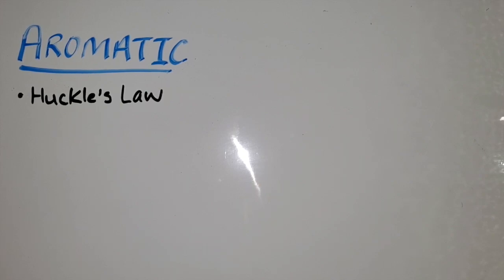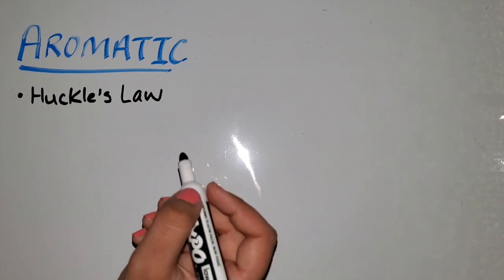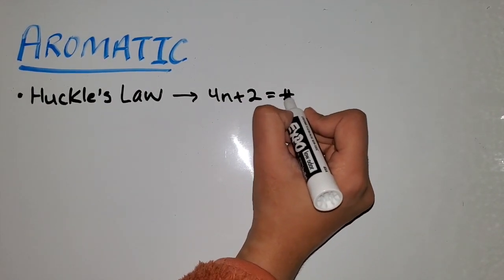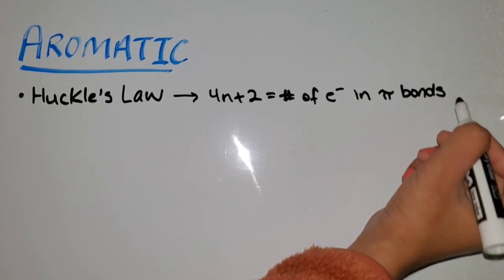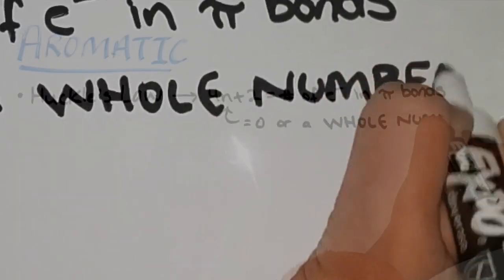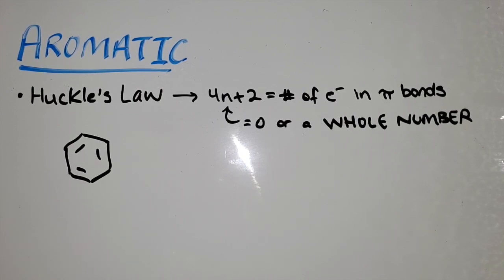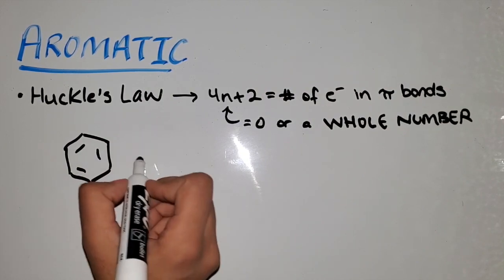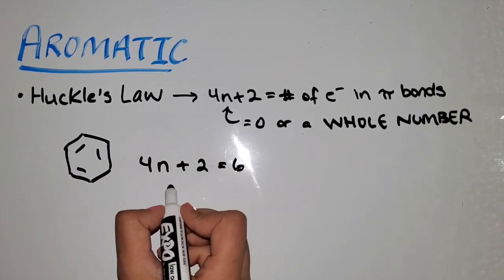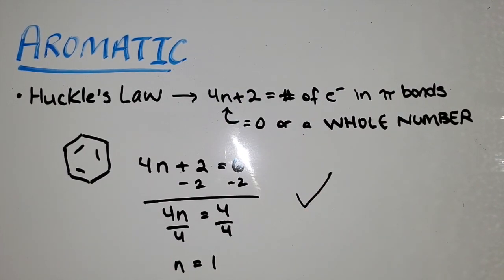The fourth and last condition is Huckel's Law, and this is very important. Even if the molecule matches the other three conditions, it has to follow this law: 4n + 2 equals the number of electrons in pi bonds, and n has to equal 0 or a whole integer. For benzene, we count 6 electrons in pi bonds. So 4n + 2 = 6, solving gives n = 1, which is a whole number. Therefore, according to Huckel's Law, benzene is aromatic.